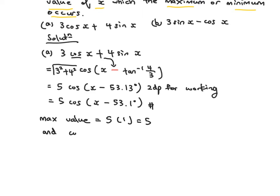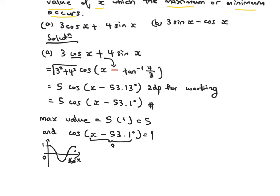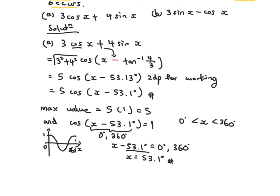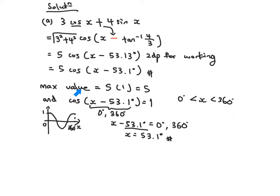The maximum occurs when the cosine value reaches 1. Looking at the cosine graph, it reaches 1 when x is 0° or 360°. That means x − 53.1° = 0° or 360°. We usually solve for x between 0° and 360°, so adding 53.1° to both sides gives x = 53.1°, and the other angle is rejected. The maximum value of the whole expression is 5, and this happens when x = 53.1°.